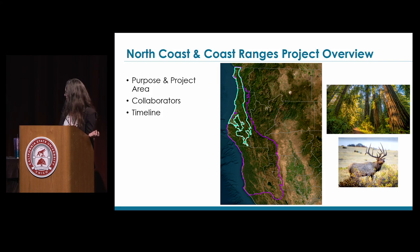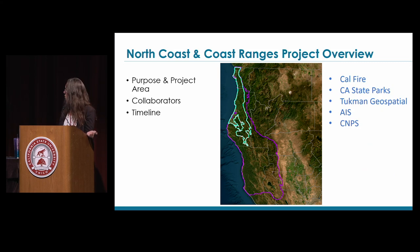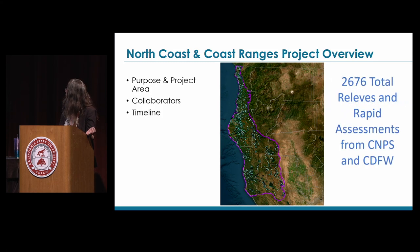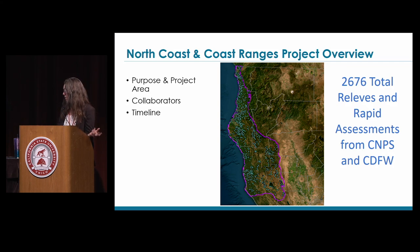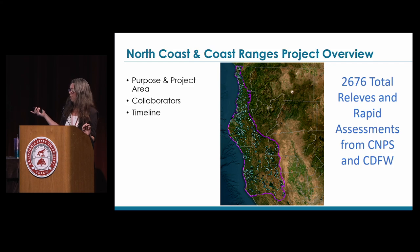The sampling area covers portions of Del Norte, Humboldt, and Mendocino counties. We had funding not only from state legislation, but also from CAL FIRE and state parks to complete the sampling. We're working with Tuchman Geospatial Aerial Information Systems and CNPS for this work. We finished the sampling phase over the last two years — we have over 2,600 samples done, a lot of which was done by CNPS volunteers. About 1,700 samples are from CNPS and 900 from CDFW. We have a new RFP that will build on the classification to map the rest of the North Coast ecoregion.